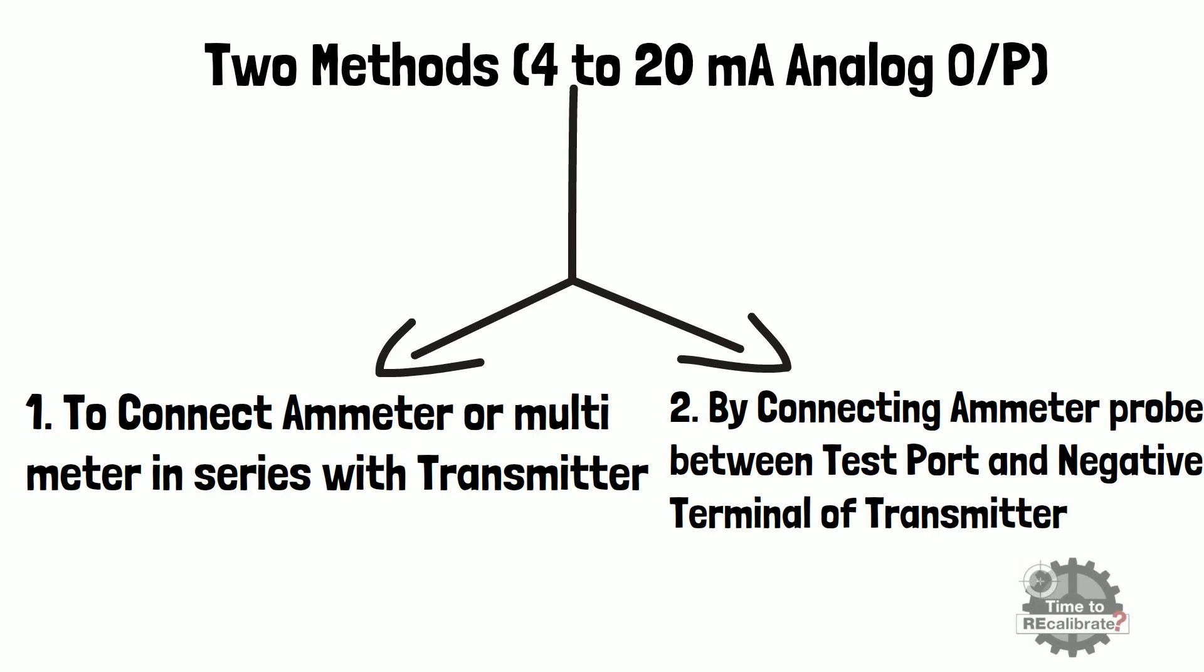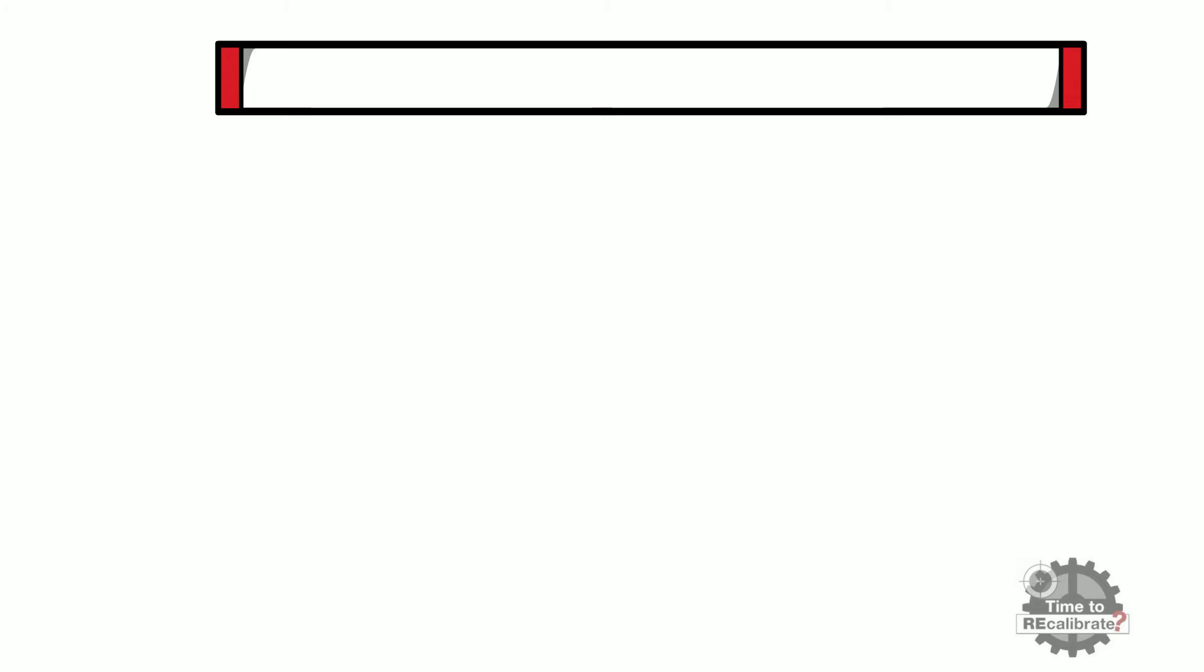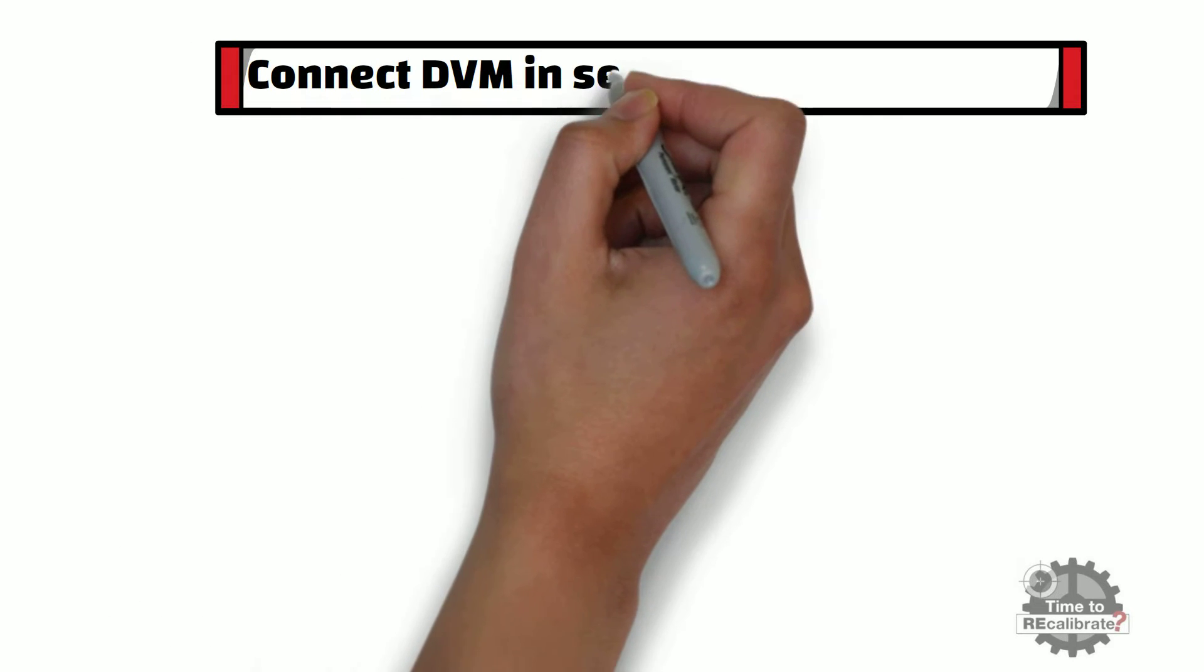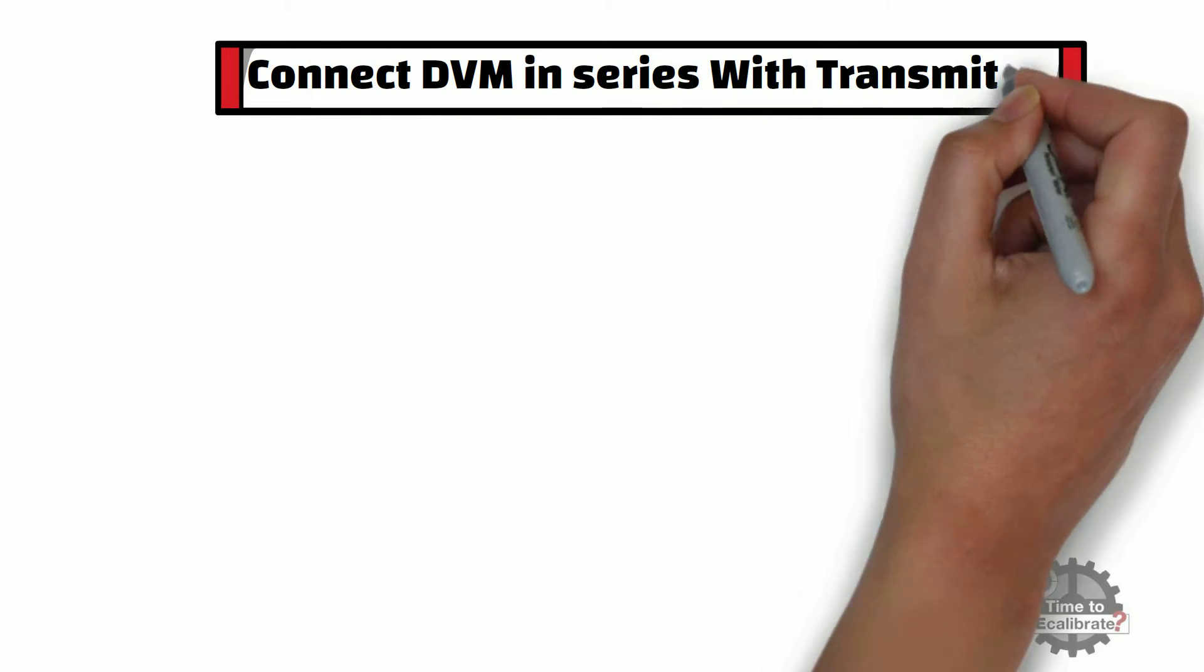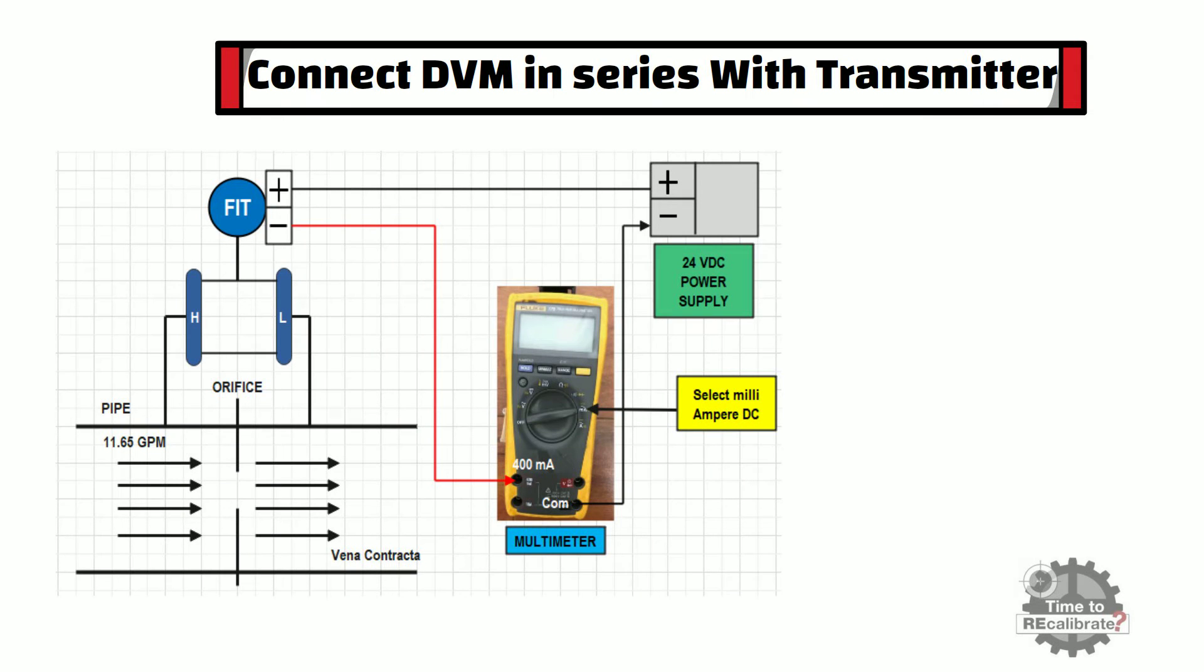So let's go to first method. In first method, we need to connect multimeter in series with transmitter. As you can see from the diagram, put multimeter in current measuring mode.